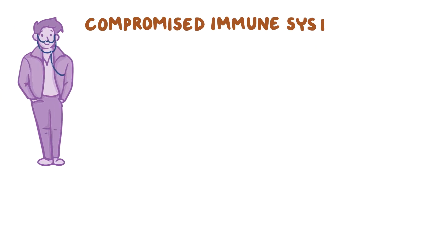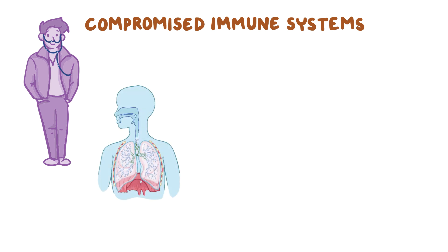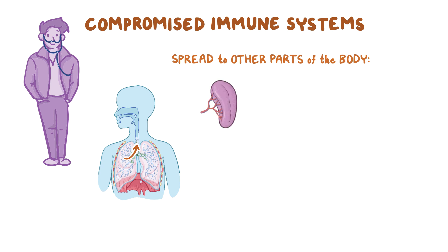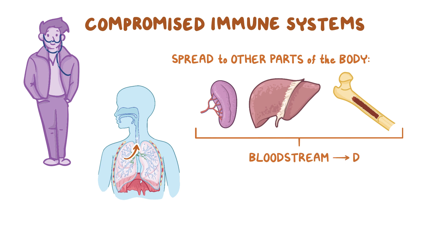In rare cases, and almost universally in individuals with compromised immune systems, the infected macrophages can move into the lymphatics and spread the bacteria to other parts of the body, especially to the spleen, liver, and bone marrow. And from these organs, they can spread to the bloodstream, causing disseminated disease.